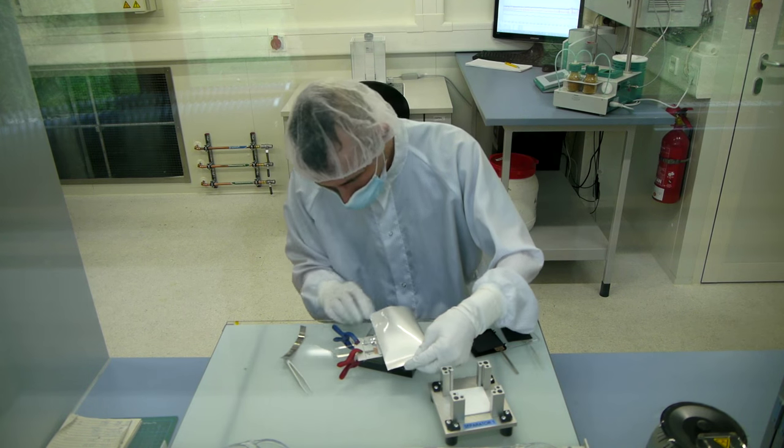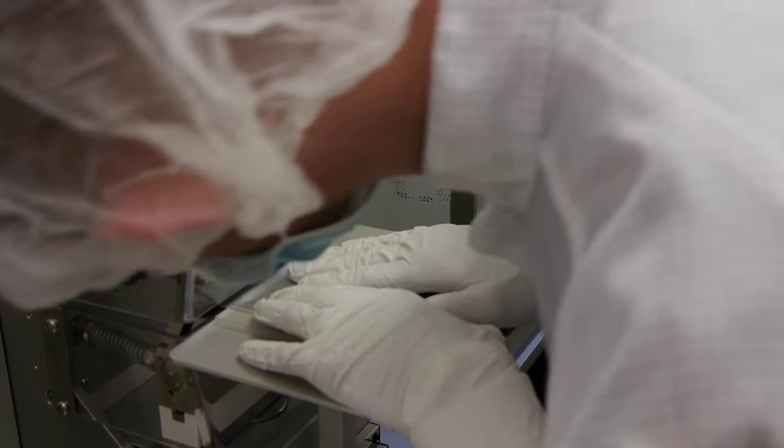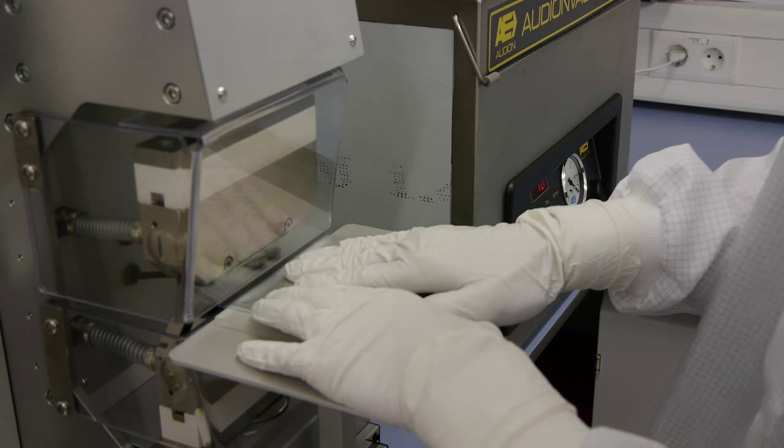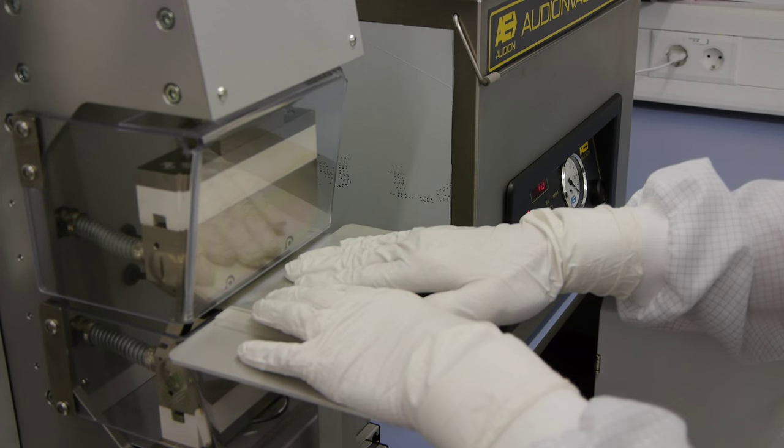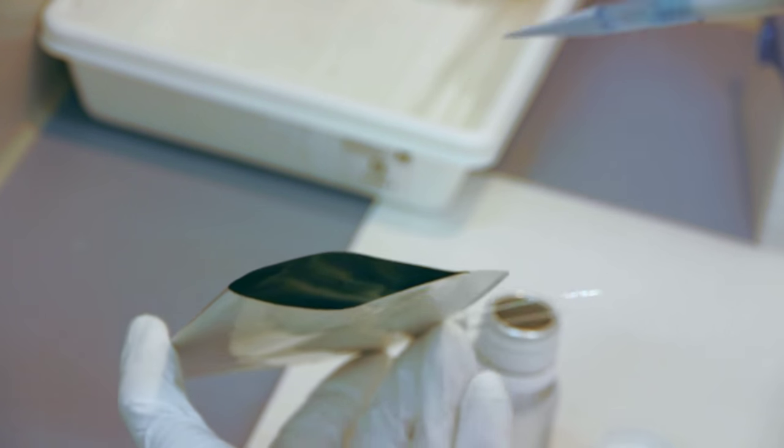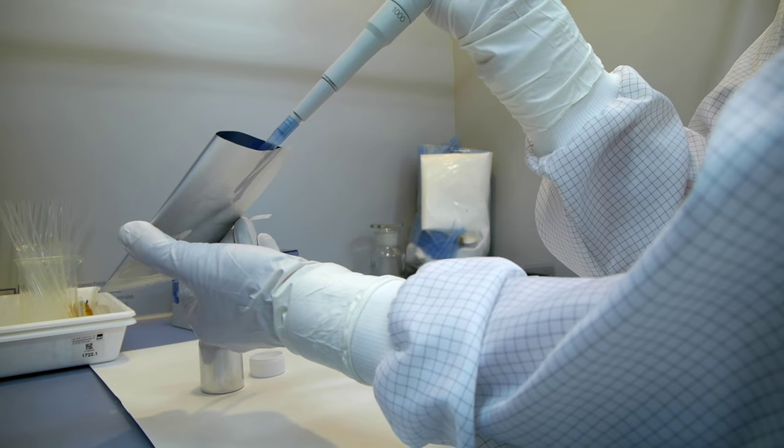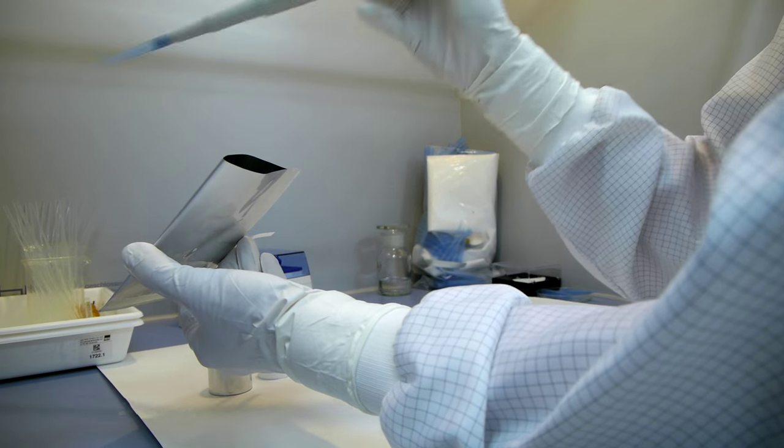Subsequently, the stacked cells are inserted in the pouch and the sides of the pouch are joined together by means of heat sealing, leaving one side open. By using a pipette, the researcher fills the electrolyte, which consists of solvents and the conductive salt, into the cell. This enables the lithium ions to move freely from one electrode to the other.